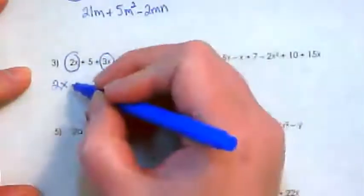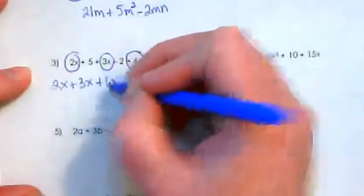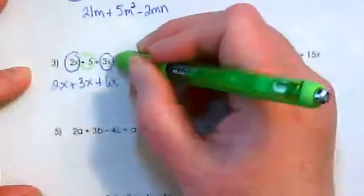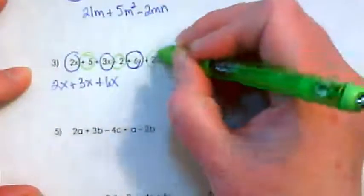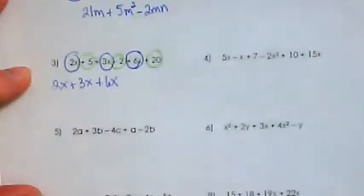So I have 2x plus 3x plus 6x. And then if you notice, we have a positive 5, a minus 2, and a plus 20. Those are also like terms with each other.